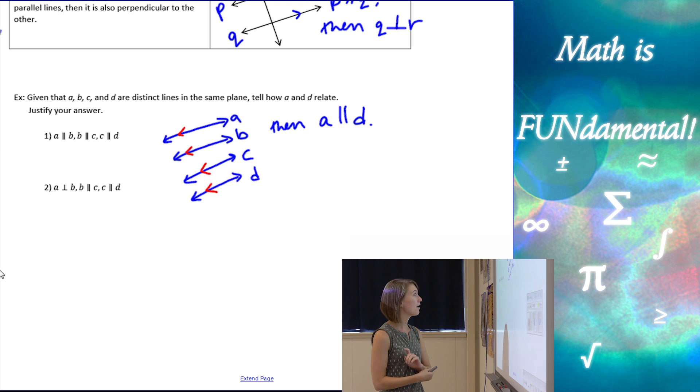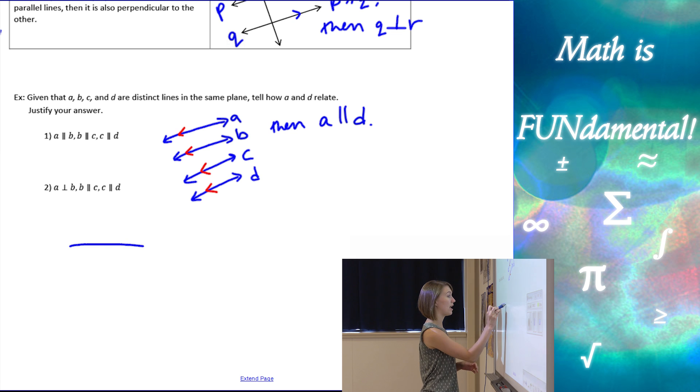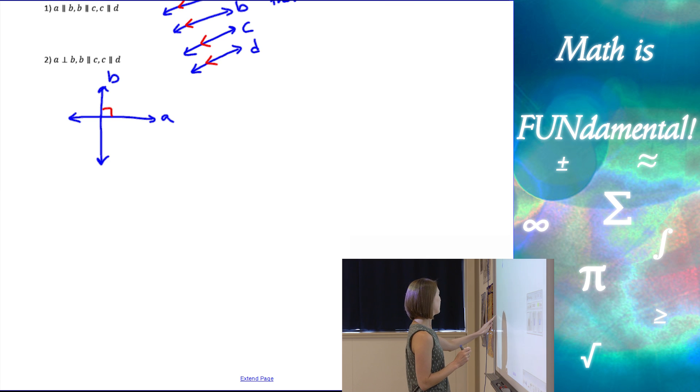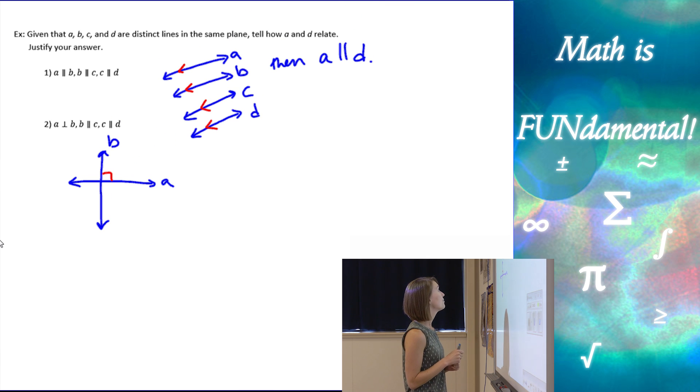Next one, we have A is perpendicular to B. So, let's draw this picture. A is perpendicular to B. So, I have A and B, and I need them to be perpendicular. All right. Now, let's see.